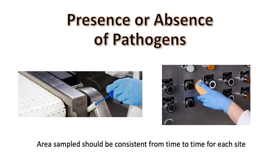On Zone 2, 3, and 4 surfaces, where you are looking for pathogens, the specific size of the area is less important because the test only indicates if a pathogen is present or absent. Much larger surface areas can be sampled with a sponge. It is, however, important to specify how these areas should be sampled so that the operator is consistent from one sampling time to the next. This will ensure that you can make valid comparisons for data collected at that location over time.